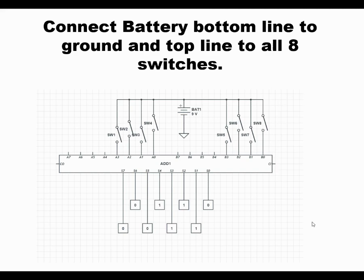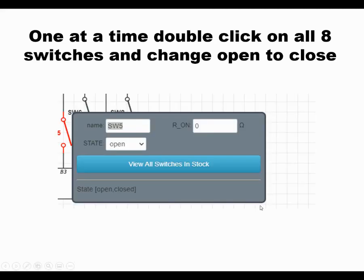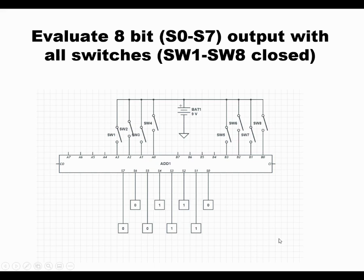So what you got to do next is one at a time, click on those switches, double click on them, and you get this option where it says open or close. Close them and see what happens with the output. You start with them all open, so you can write that down and close and see how it changes.